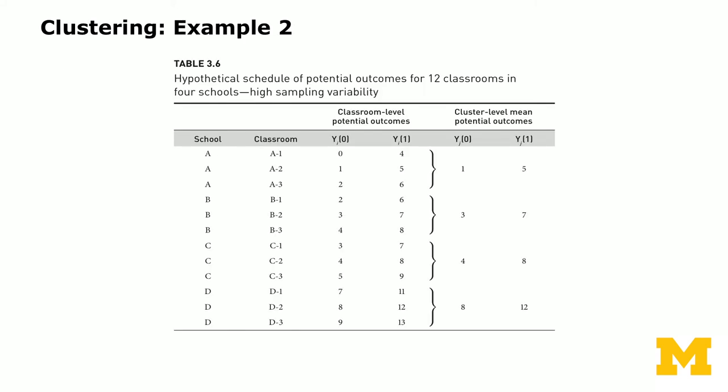Another scenario where clustering often happens is when it is politically infeasible to randomize at the individual level. In an education setting with four schools (A, B, C, D), each having three classrooms, the treatment is having an additional teacher in the classroom. There are potentially two levels for randomization: at the classroom level or at the school level.